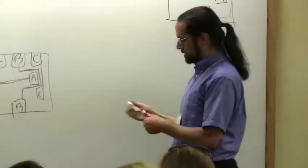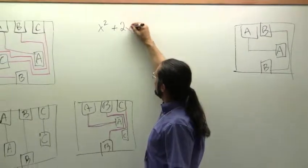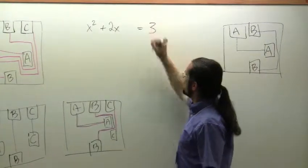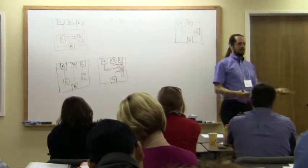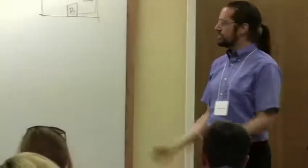Another example of this wishful thinking strategy that I really love — that we all use all the time, but we probably don't even think of it as an example of this strategy — is when you want to solve something like this. It's got x squared and 2x. This is a pain.